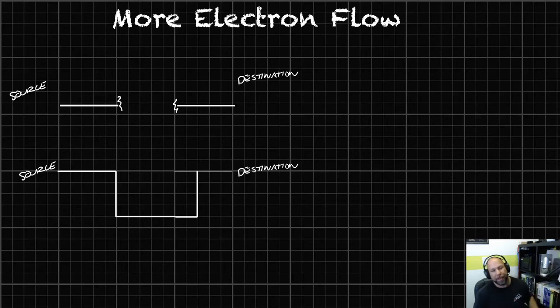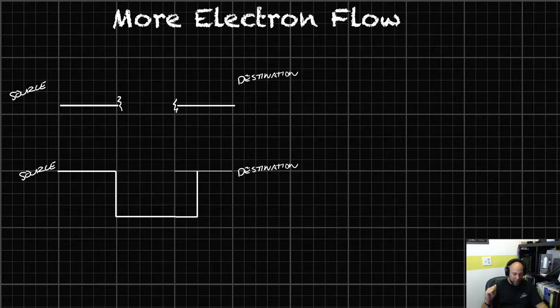This will be the third and final lecture video for this week. We've got some stuff to get through. We need to talk about some more electron flow, we've properly defined electricity, and we're going to talk about voltage, current, and resistance — five things. I want to do this in under 15 minutes. I think we can do it.